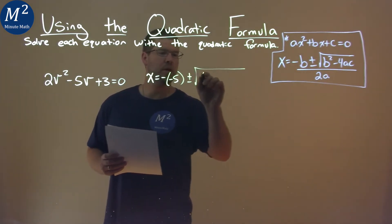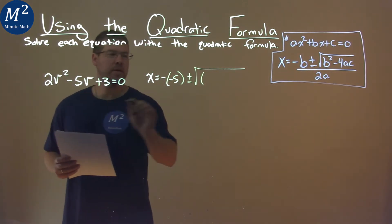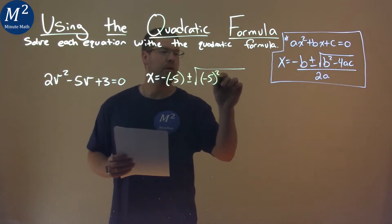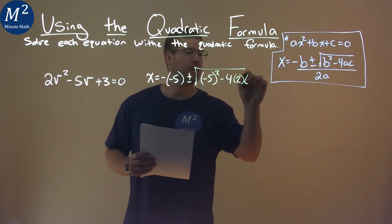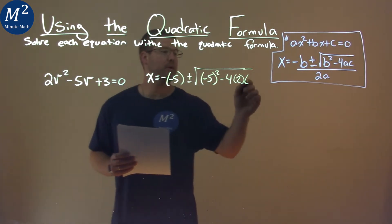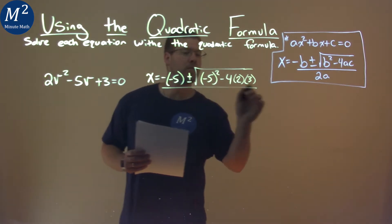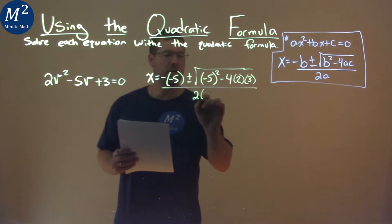Plus or minus the square root of b squared, b being negative 5, minus 4 times a, which is 2, times c, which is 3, all over 2 times a, which is 2.